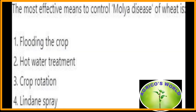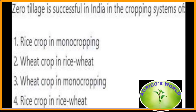The most effective means to control Molya disease of wheat is crop rotation. Crop rotation is the most effective means to control Molya disease of wheat. Zero tillage is successful in India in the rice-wheat cropping system.